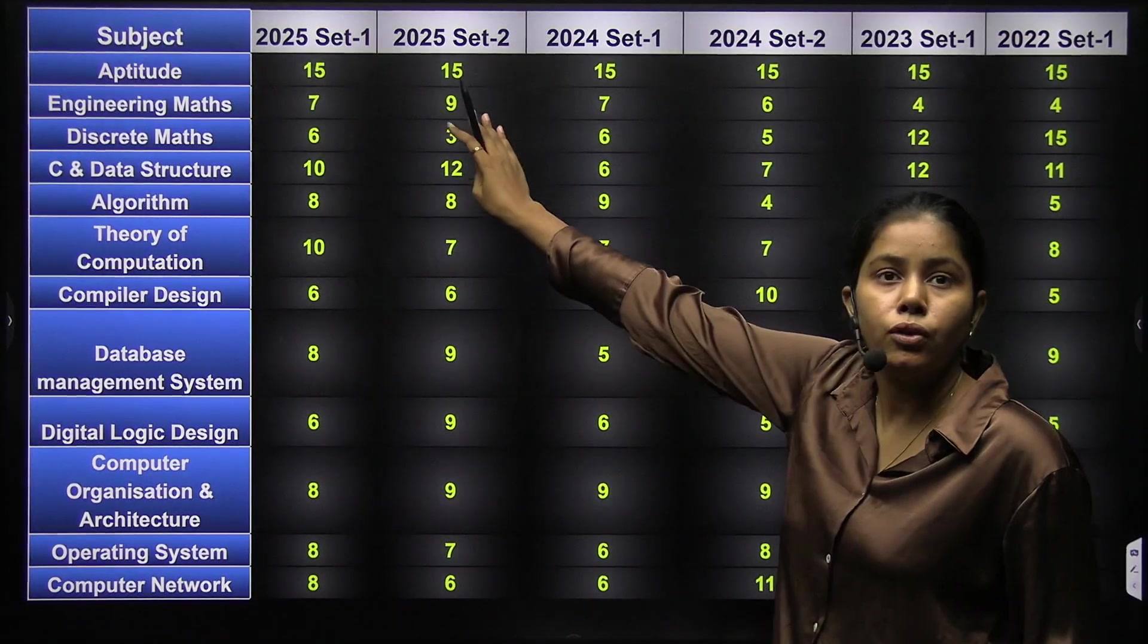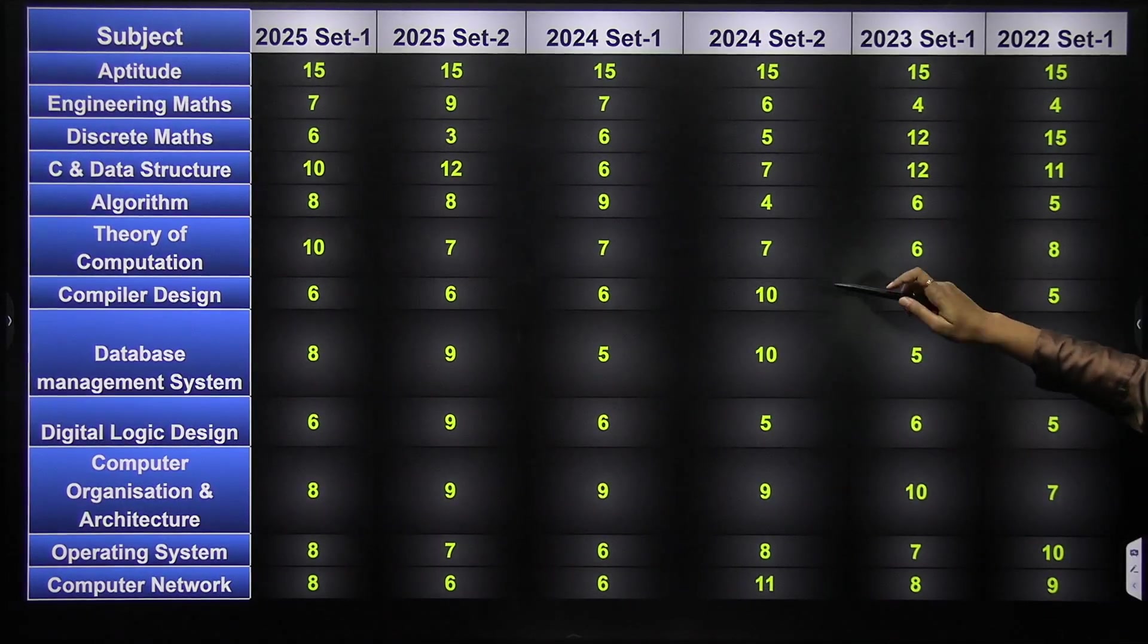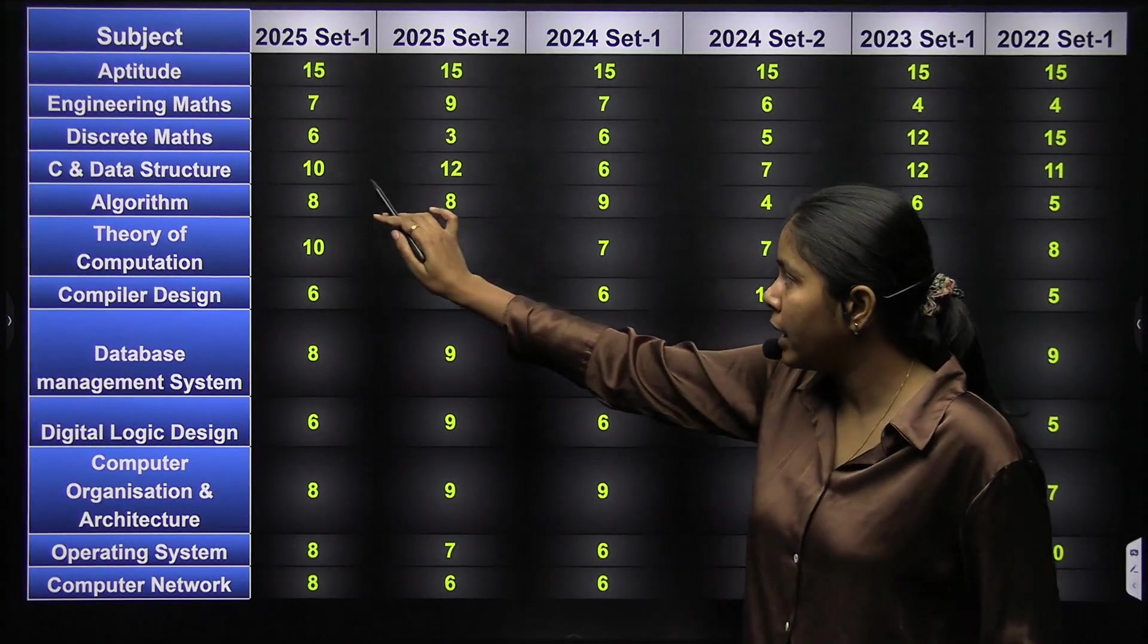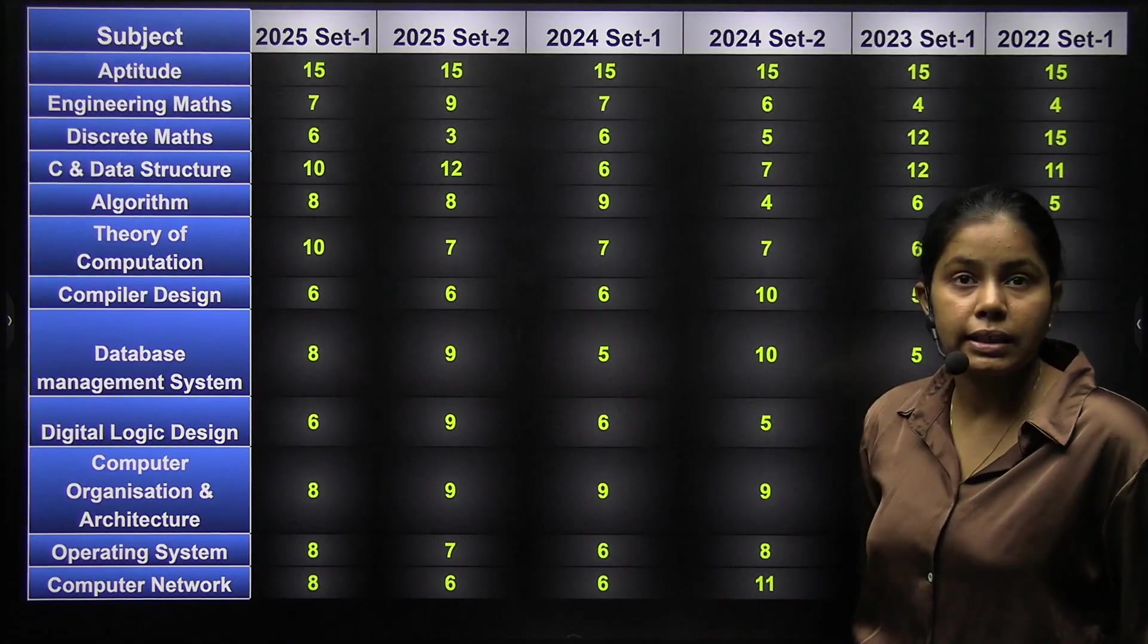Then we have C data structures, you can see that has high weightage in last year, 10 and 12 marks. Algorithm is 8 marks, again high weightage.